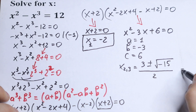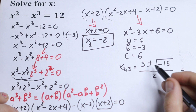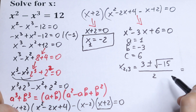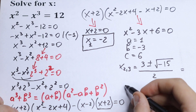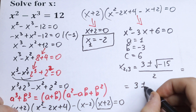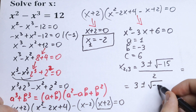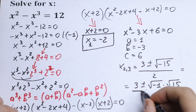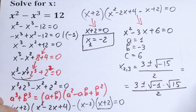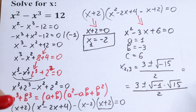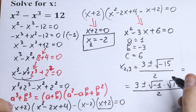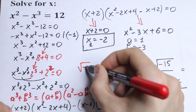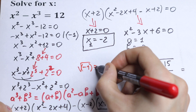Let's simplify this a little bit. We can write the square root of minus 15 as square root of minus 1 times square root of 15. So it will equal 3 plus or minus square root of minus 1 times square root of 15, all over 2. And we know that the square root of minus 1 equals i in complex number theory.